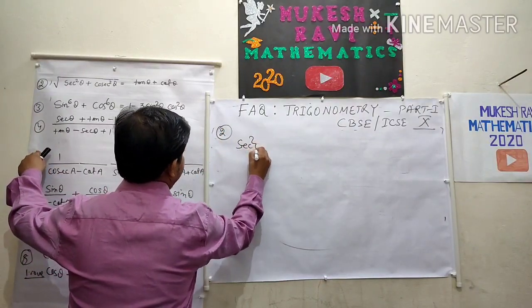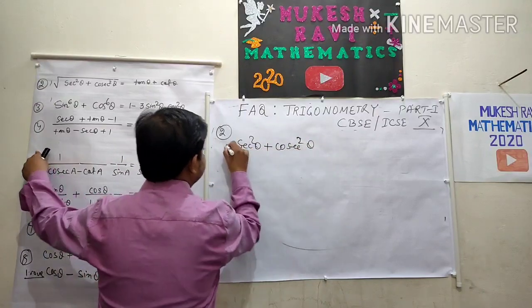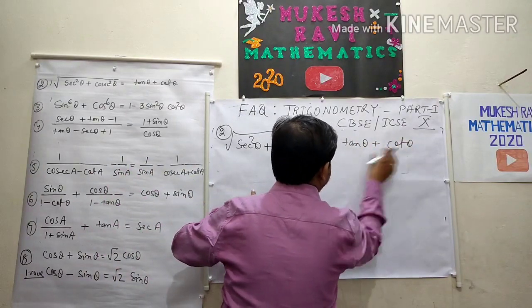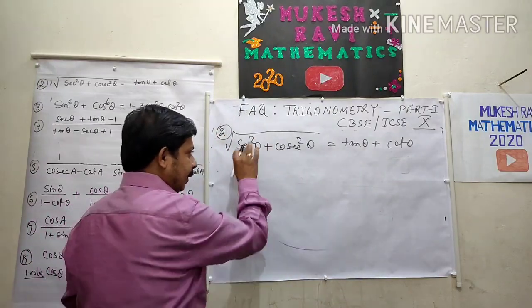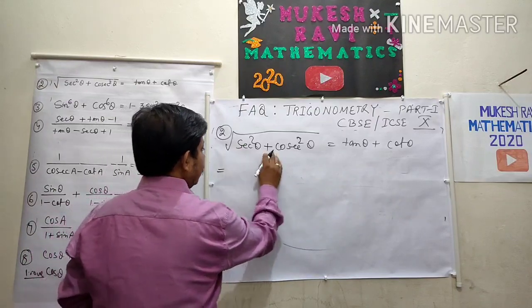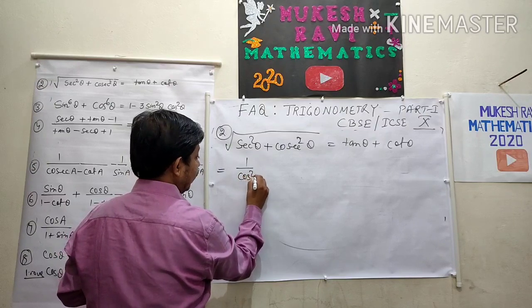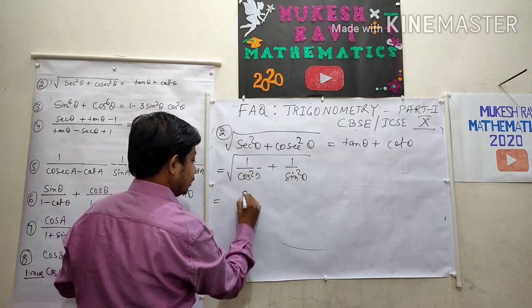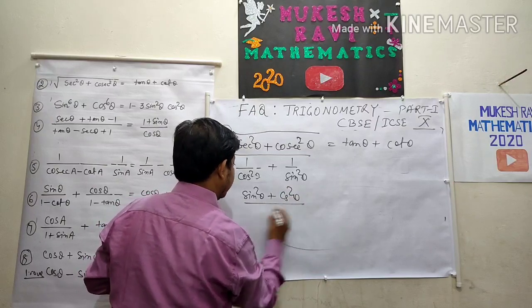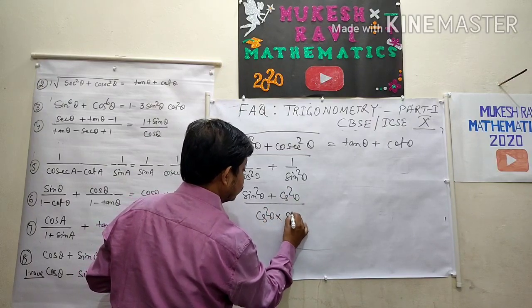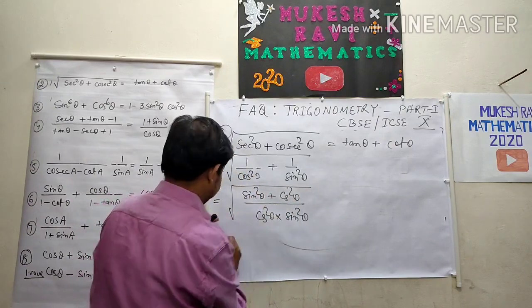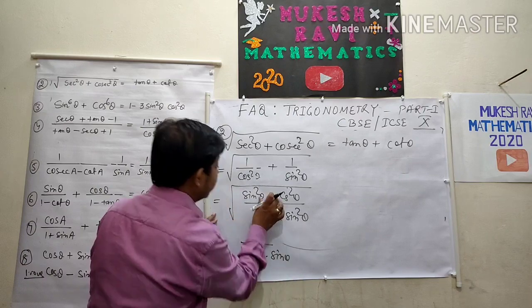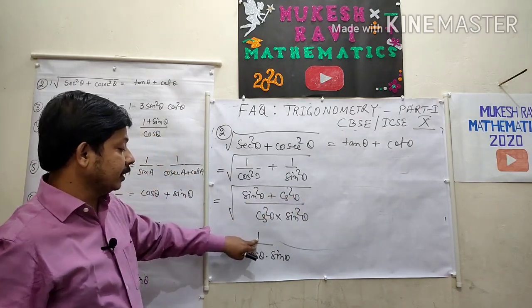Second question: sec²θ = 1/cos²θ + 1/sin²θ. This gives (sin²θ + cos²θ)/(cos²θ · sin²θ), which equals 1/(cos²θ · sin²θ). See the previous question is also related here — everything is connected. So cos²θ becomes cos θ · sin θ, and 1 is the value of sin²θ + cos²θ, so the square root of 1 is 1.